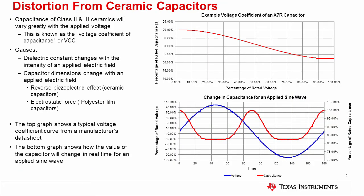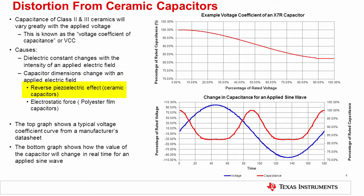The capacitance of class II and III ceramics will vary greatly with the applied voltage — examples of these are X7R and Y5V capacitors. The change in capacitance versus applied voltage is called the voltage coefficient of the capacitance, or VCC. This effect is caused by changes in the capacitor dielectric constant with the intensity of an applied electric field. The change in electric field also causes changes to the dimensions of the capacitor, resulting in a reverse piezoelectric effect that makes the capacitance decrease with applied voltage. In the case of film capacitors, the opposite occurs — electrostatic force causes the plates to squeeze closer together, increasing total capacitance. In either case, the key point is that the changing capacitance will introduce distortion.